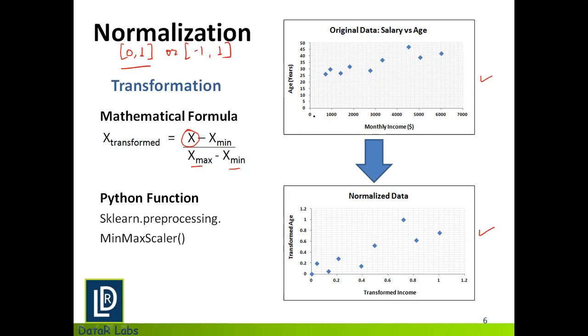Whereas the thing which changes is the range of the data. So monthly income where in the original data it was from 0 to almost 6000, in the transformed data it lies within 0 and 1. Similarly, the age, which was somewhere from 26 till 49, now my range is between 0 and 1 for age as well. So with this transformation, what I do is I fit the entire data between the range of 0 to 1.